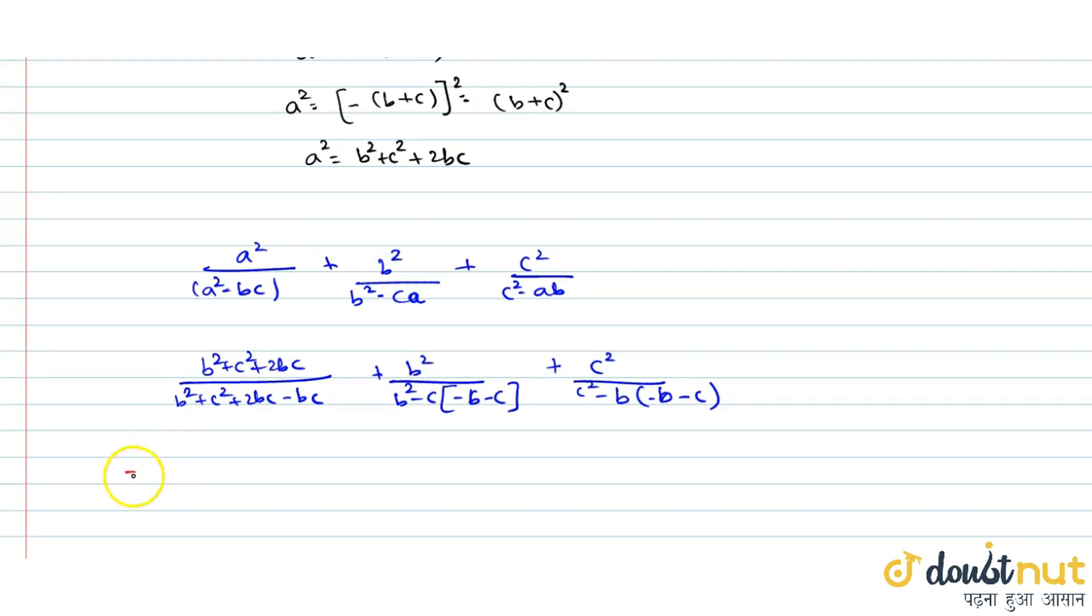That would give us b square plus c square plus 2bc upon b square plus c square plus bc.